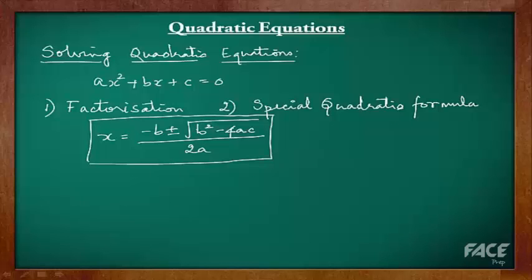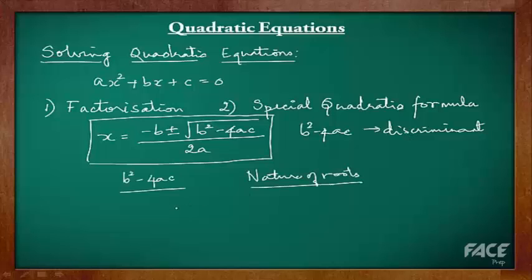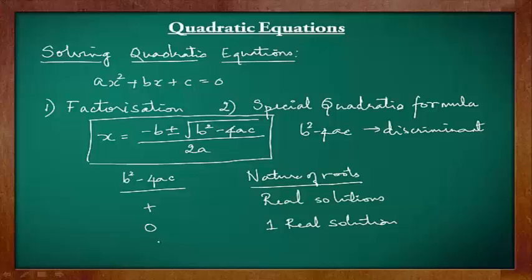Notice b² - 4ac in this formula — it is called the discriminant. It discriminates between the possible types of answers. If b² - 4ac is positive, we get two real solutions — both roots are real numbers. If b² - 4ac equals 0, the numerator has only one value, minus b, so we get only one real solution. If b² - 4ac is negative, we get two complex solutions.